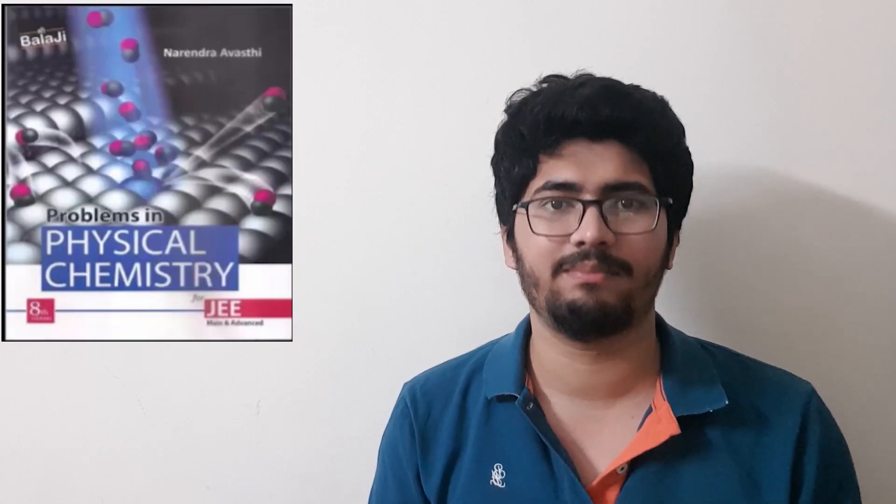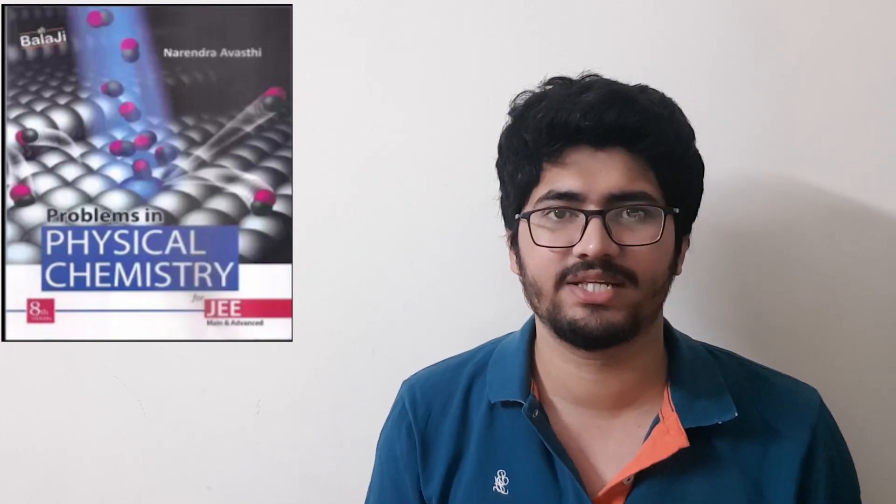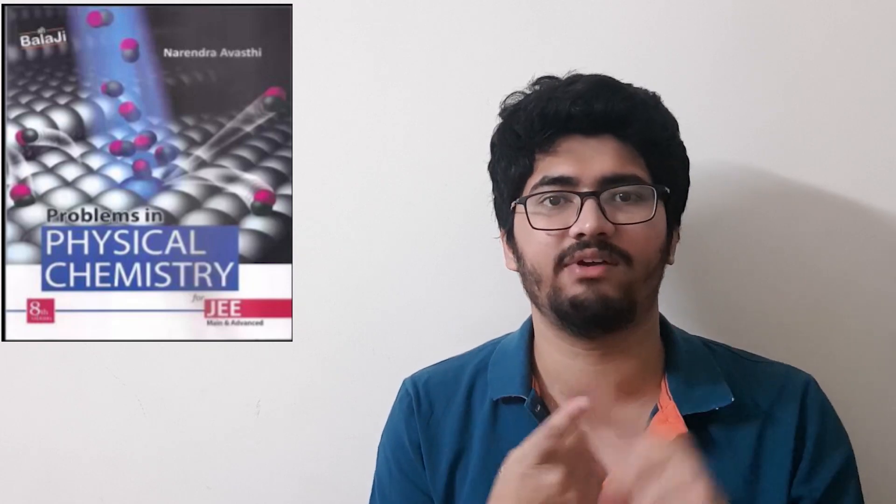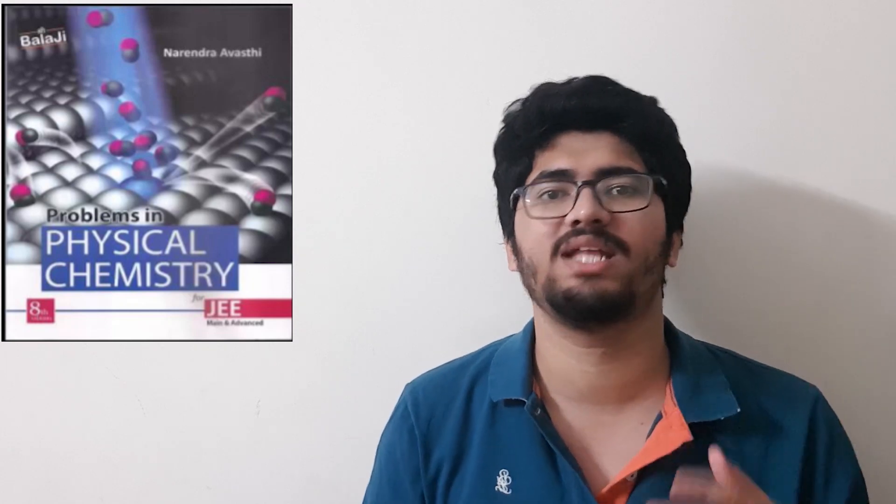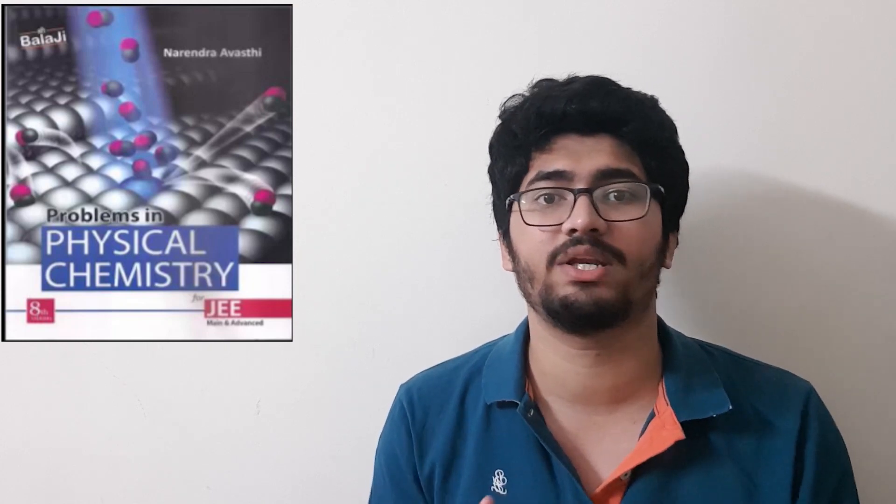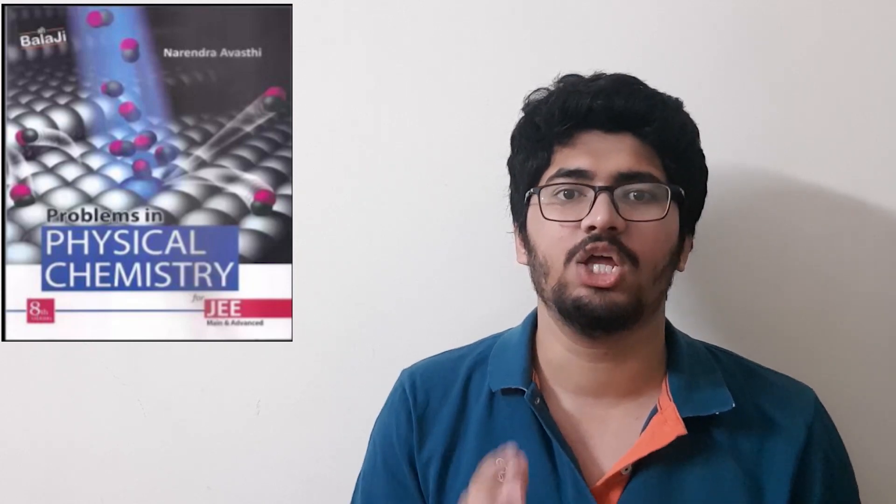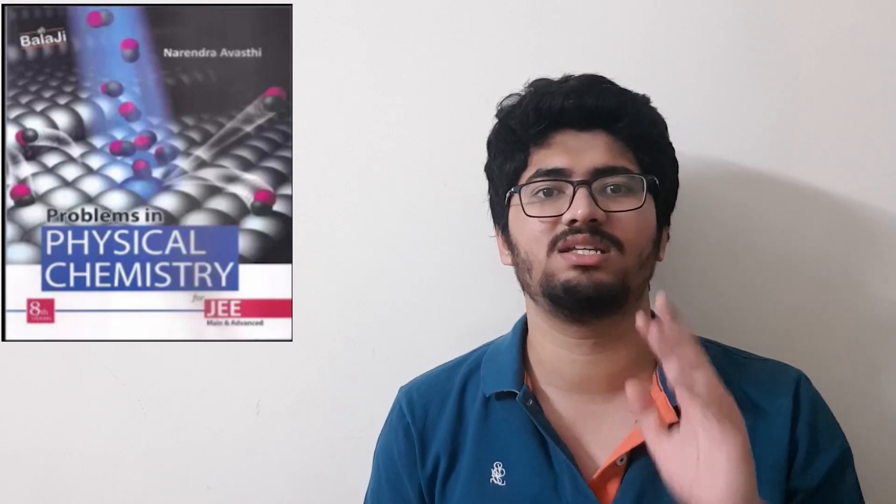Let's start the video. The first book's name is Narendra Avasthi. Basically NA is called the bible of physical chemistry. Why? Because there are so many good questions, there are three levels - level 1, level 2, and level 3. Level 1 and level 2 are basically mains point of view and level 3 is advanced point of view. So if you want to practice questions, NA is the perfect book for you.